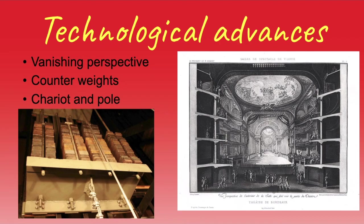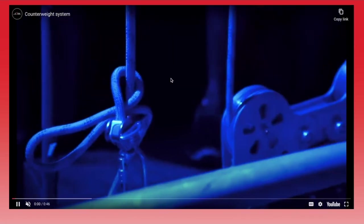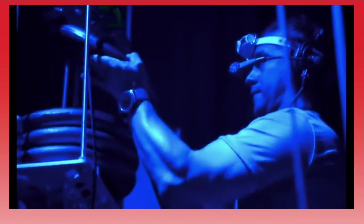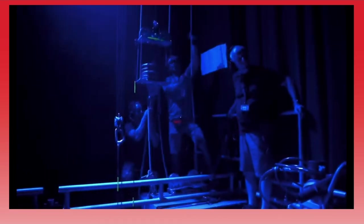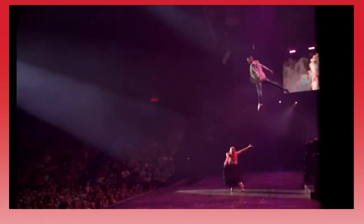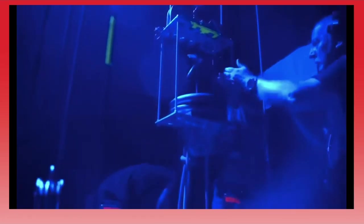The next technology is the counterweight system, which we still use today. This is where you have weights offstage that counterweight something onstage — you could pull it and it would bring something up out of the way, like curtains. We usually use counterweight systems for curtains. Here is a modern counterweight system where you can see pulleys and levers; you use the counterweight to help bring things up easily. You can also use counterweight systems to help fly actors today, though they didn't do this back in the Italian Renaissance.